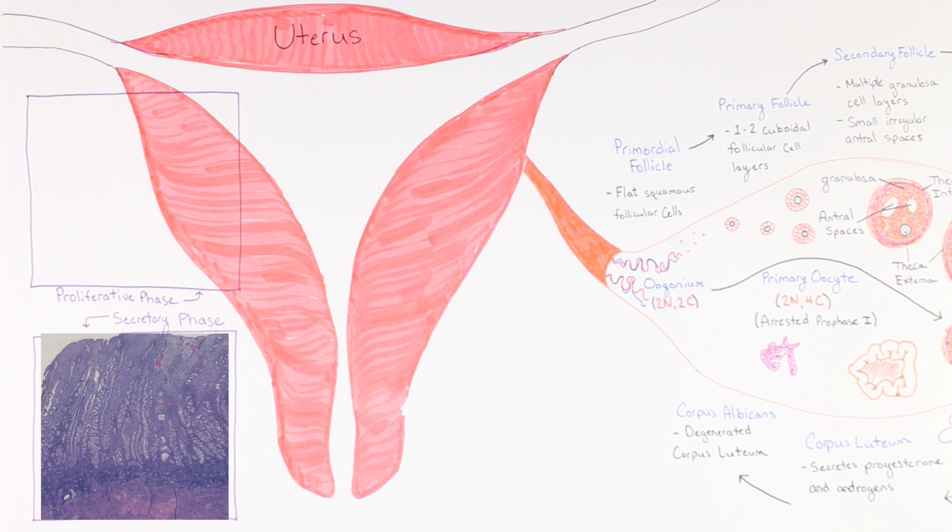The secretory phase is defined by a thick endometrium with glands that have become highly coiled and filled with secretions such as glycoproteins and glycogen. The thickness of the endometrium is in fact at its maximum during this time. The secretory phase occurs while the corpus luteum secretes progesterone and ends if there is no fertilization which leads to degeneration of the corpus luteum into the corpus albicans.